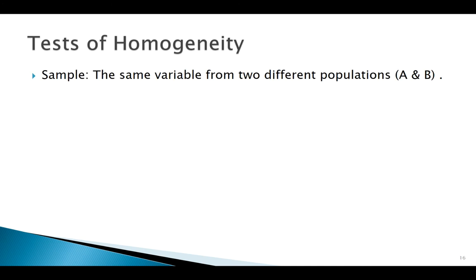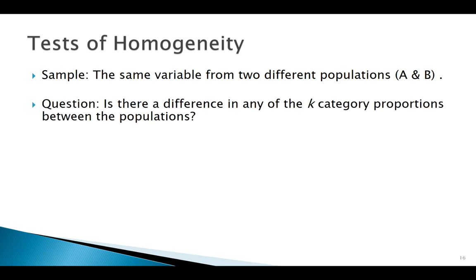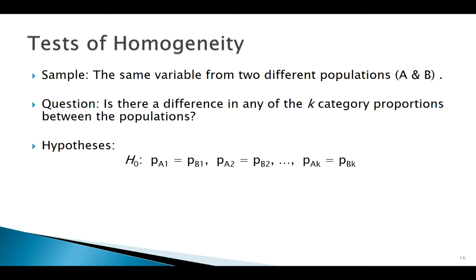Now let's expand on tests of homogeneity. This is where I'm looking at the same variable from two different populations — call them A and B. My question is: do the proportions of individuals falling into each category look the same for both populations? The null hypothesis is that the proportion of individuals in population A falling into category 1 equals the proportion in population B falling into that category, and so forth for all K categories. The alternative is that they're not equivalent.